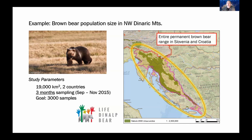The first example is a large study where we estimated the population size of brown bears in two countries — Slovenia and Croatia. We sampled a large area of 19,000 square kilometers and planned for a very short and intensive sampling over three months, to satisfy population closure and get a good estimate of population abundance.